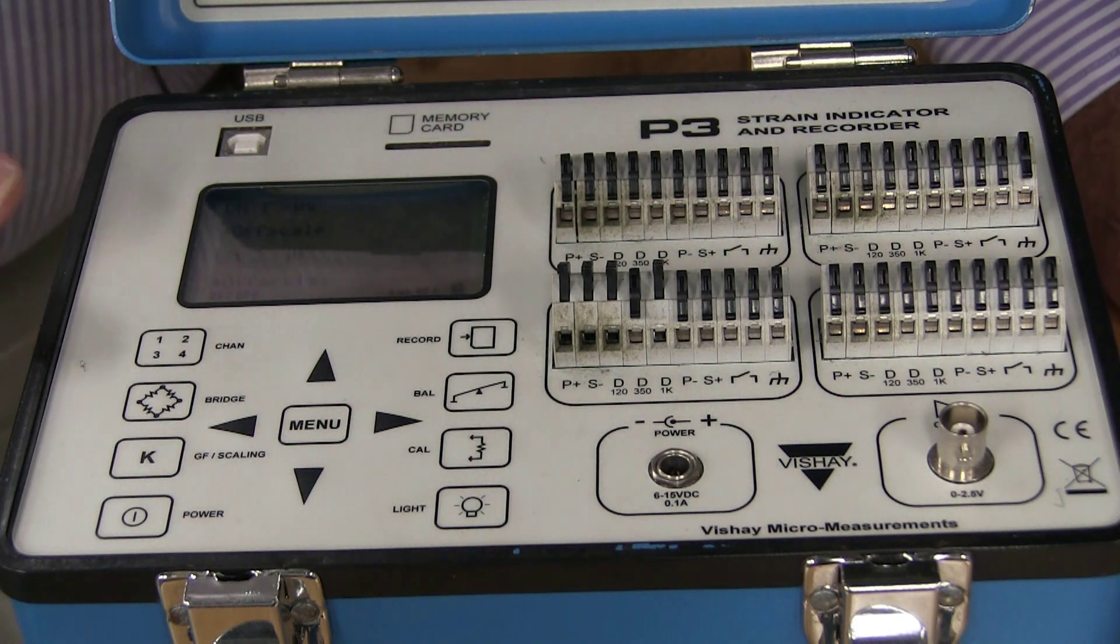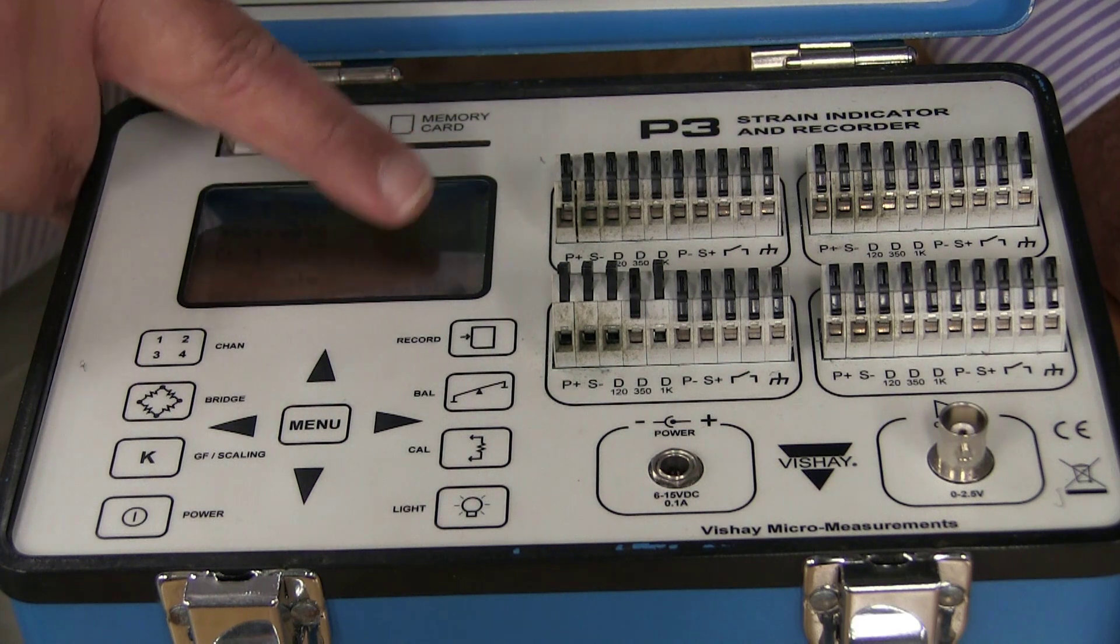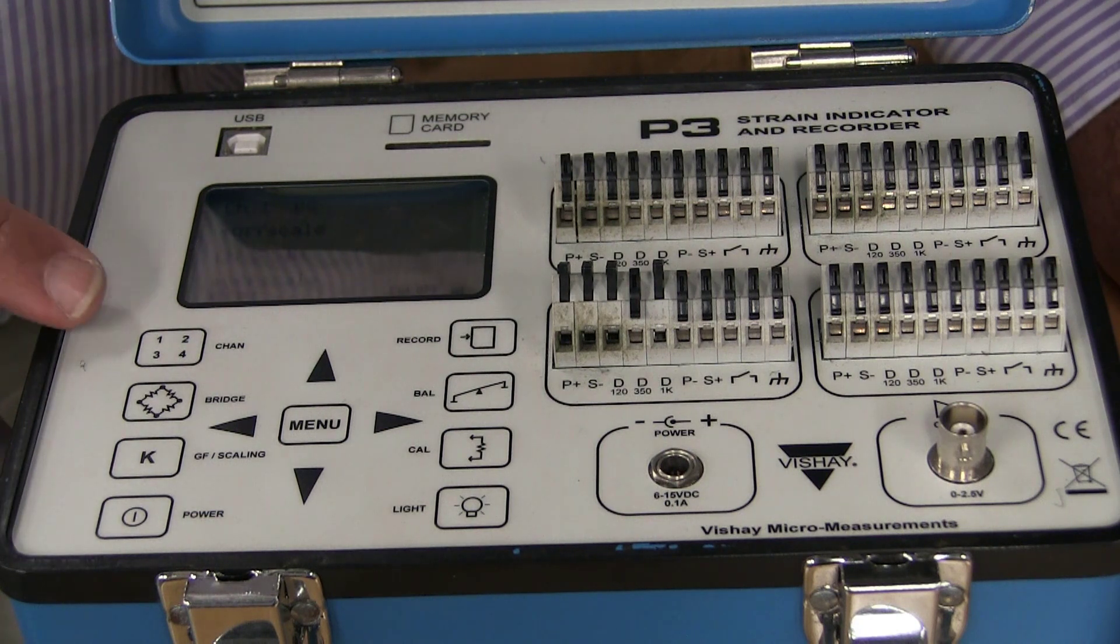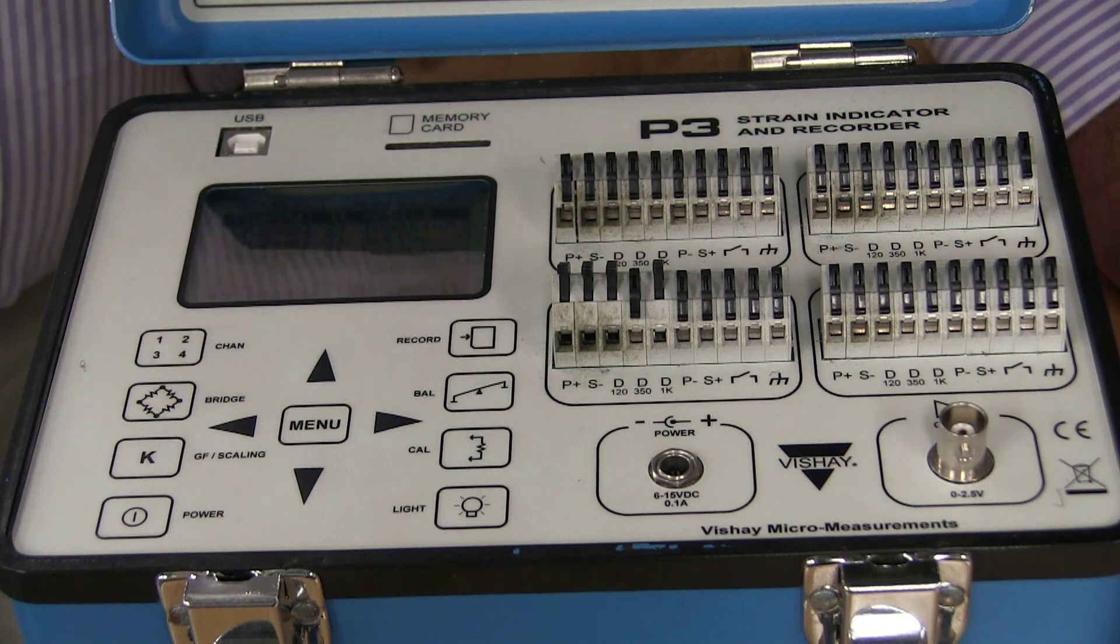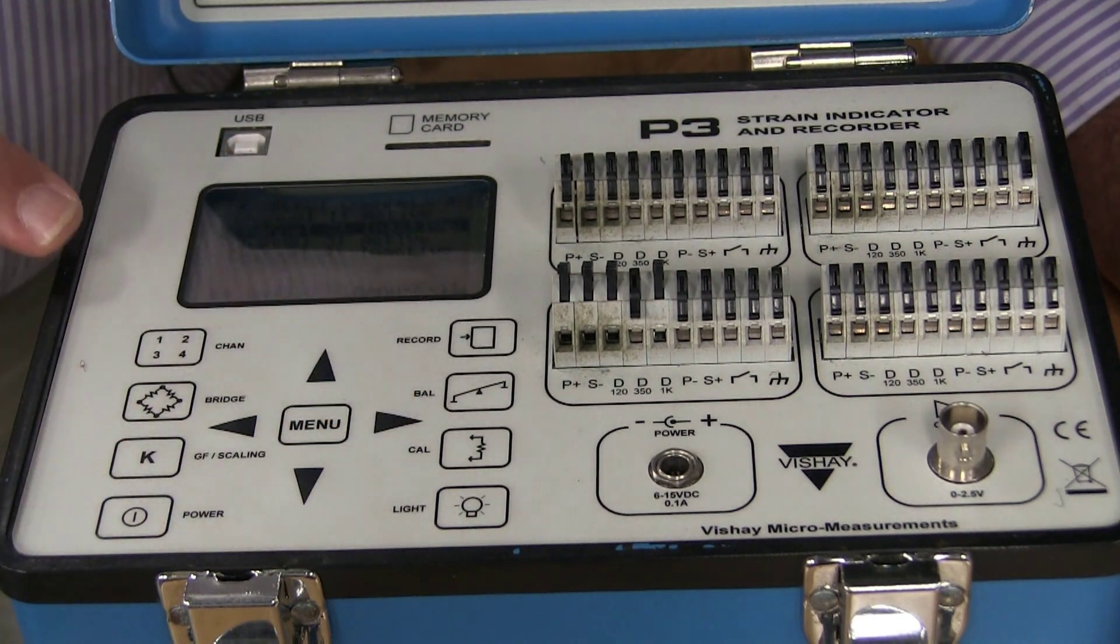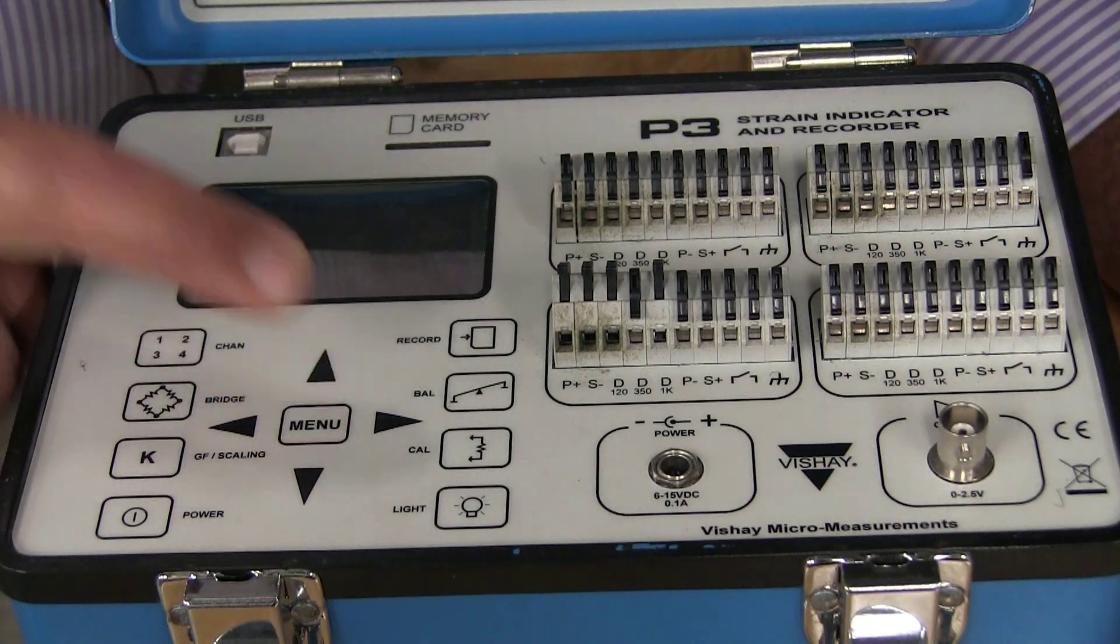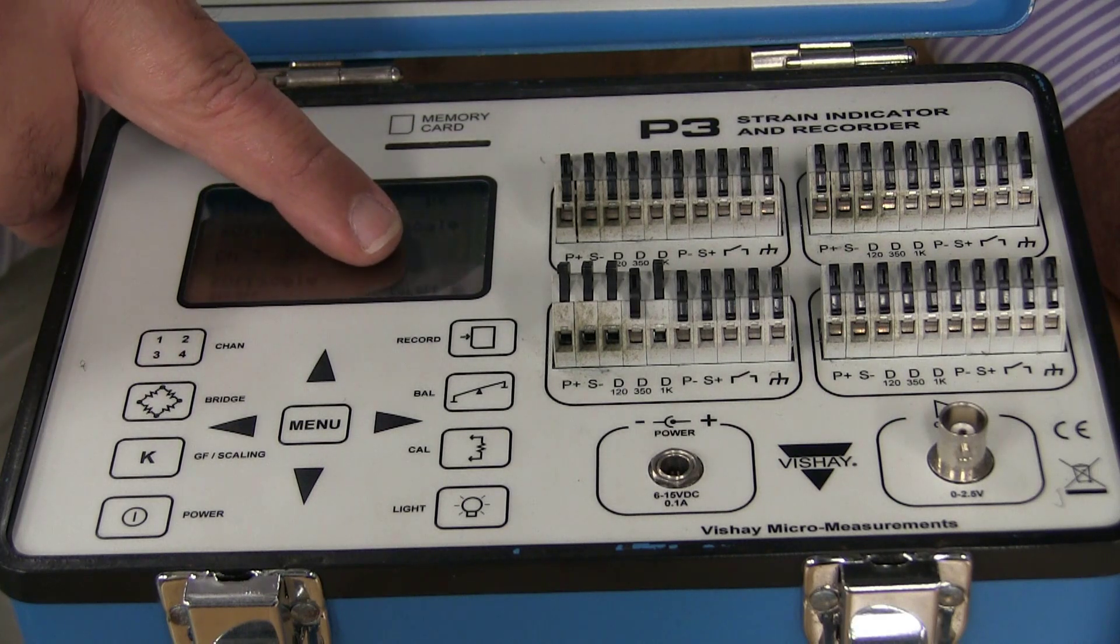The first thing that we want to do is we want to set up the right number of channels. Right now, if you can see on the screen, channels one and three are active, channels two and four are blanked out, but I actually need three channels because I have three gauges in my rosette. I'm going to push this button over here that says one, two, three, four channel. This allows you to select whether the channels are active or not, and so I'm going to scroll down to channel two and make that one active as well, and then I push menu to pop back up, and now you can see channels one, two, and three are all active. Channel four is inactive.